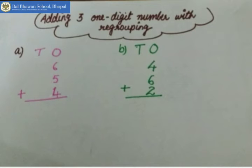Now see, there are 3 numbers again in the second example. First is 4, then 6 and 2.